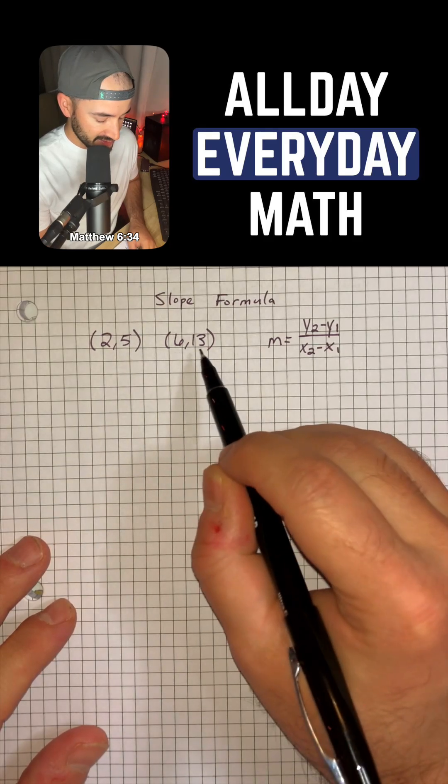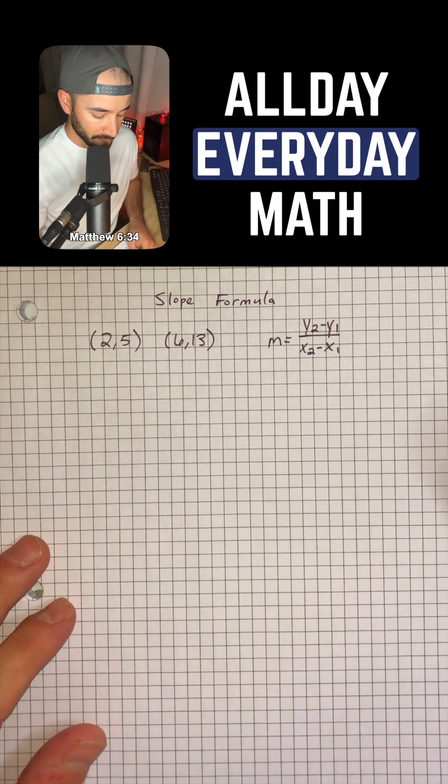So we have the points (2, 5) and (6, 13), and we want to use the slope formula to find the slope.